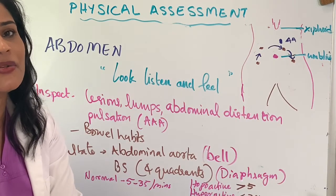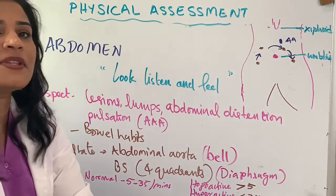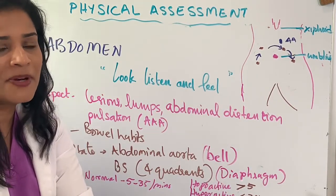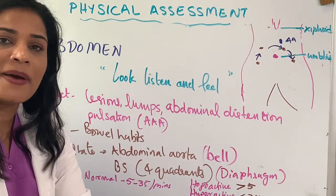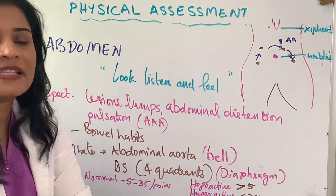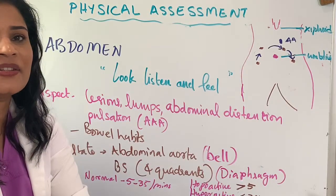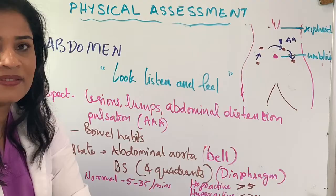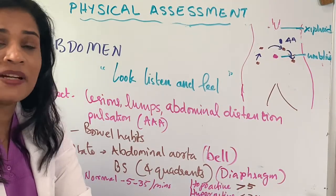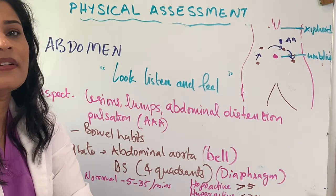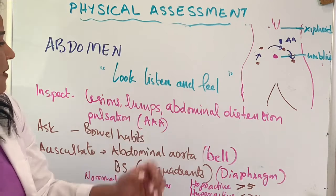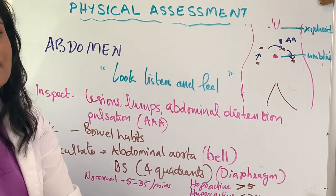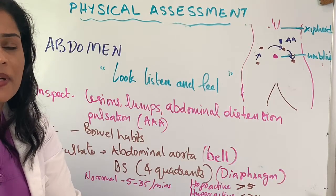After the cardiac exam, you proceed with abdominal examination using three steps: look, listen, and feel — starting with inspection, then auscultation, then palpation. When you inspect, you are looking for any abnormal lesions, discoloration of the skin, abdominal distension, any type of lumps, and abnormal pulsation that could indicate an abdominal aortic aneurysm.